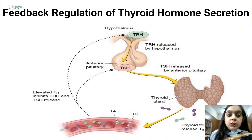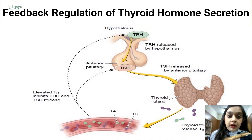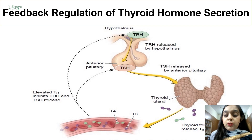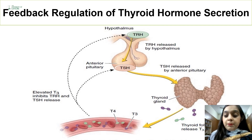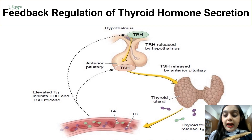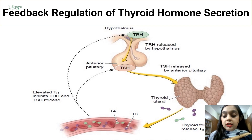In the positive feedback mechanism, when blood levels of T3 and T4 reduce, the first stimulus goes to the hypothalamus, resulting in the release of TRH. TRH then stimulates the production of TSH from the anterior pituitary. This TSH is released into the bloodstream and its target organ is the thyroid gland, where it stimulates production of T3 and T4, which then enter the blood, restoring their levels.